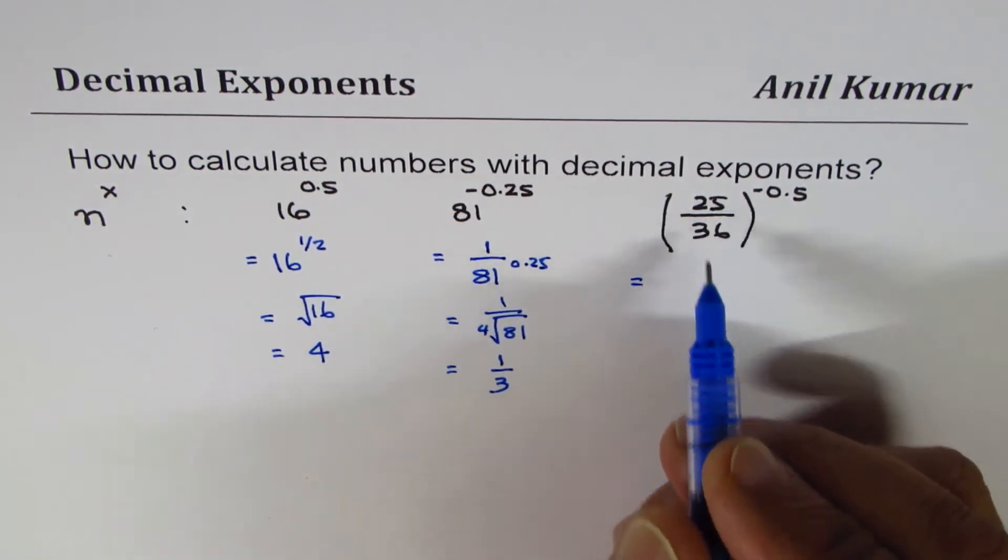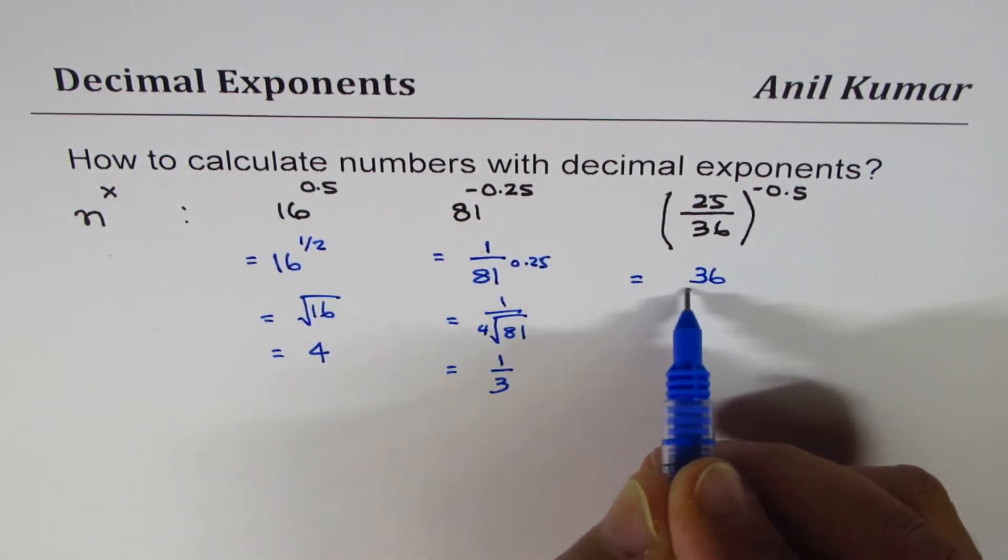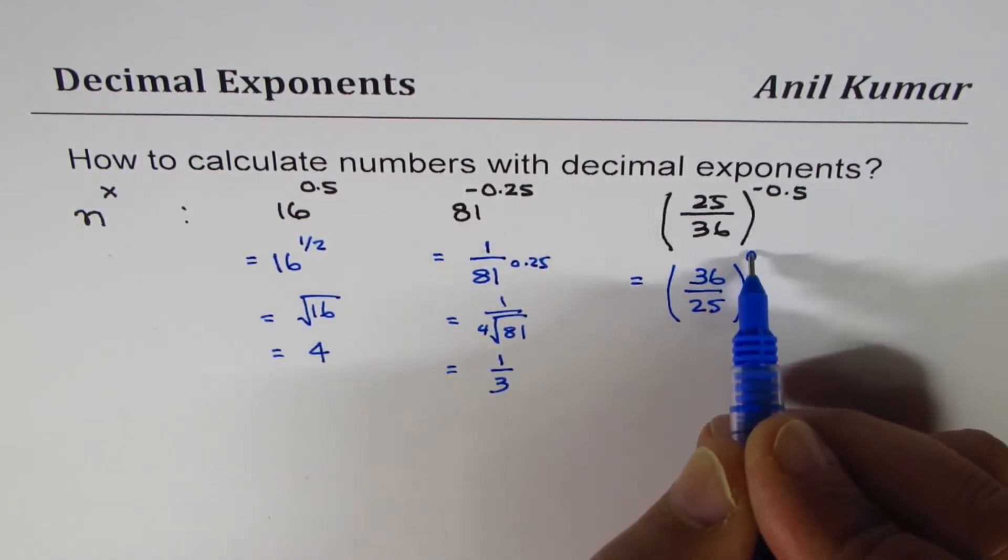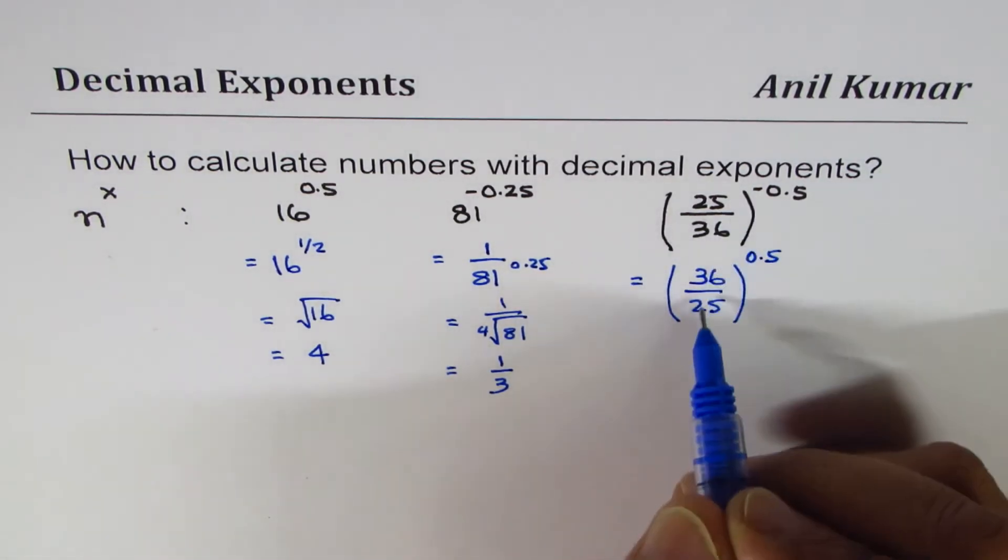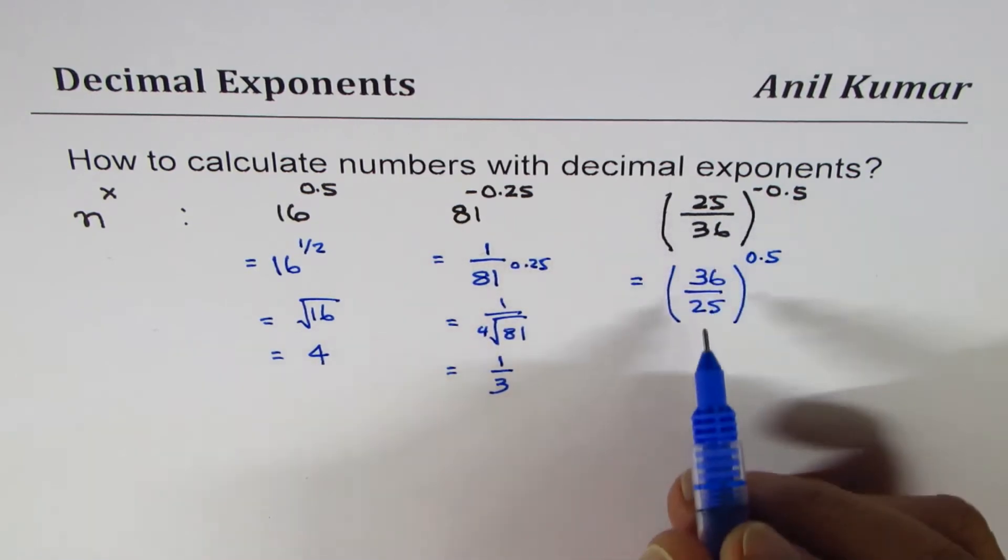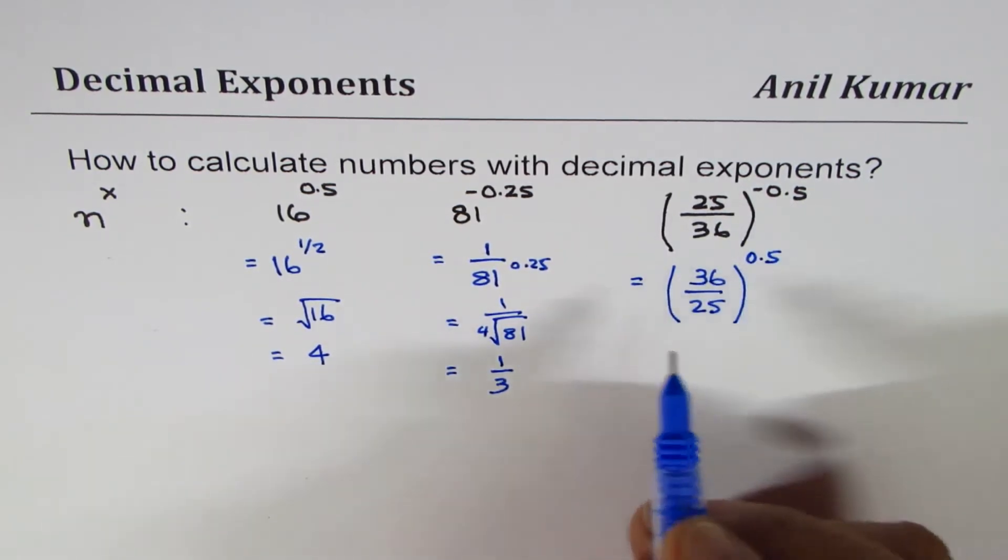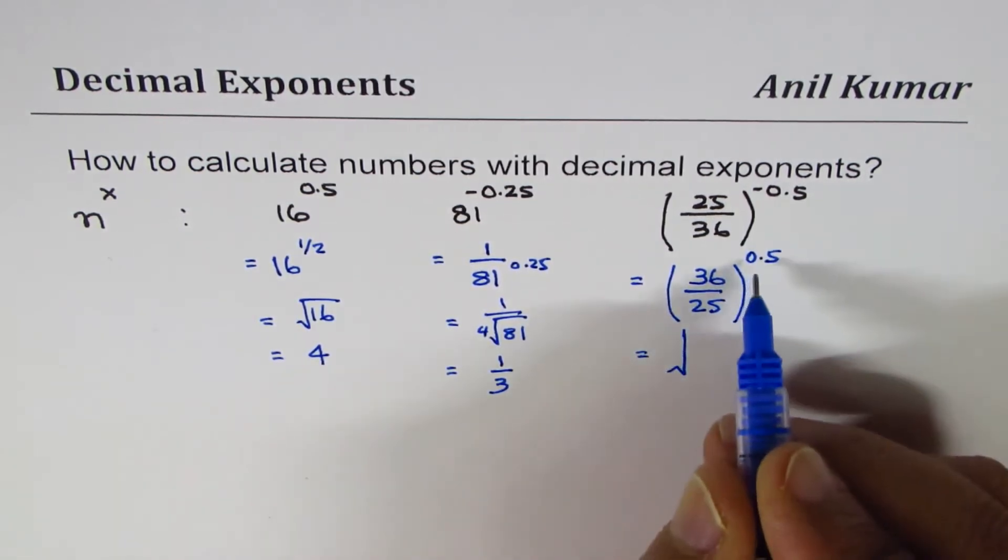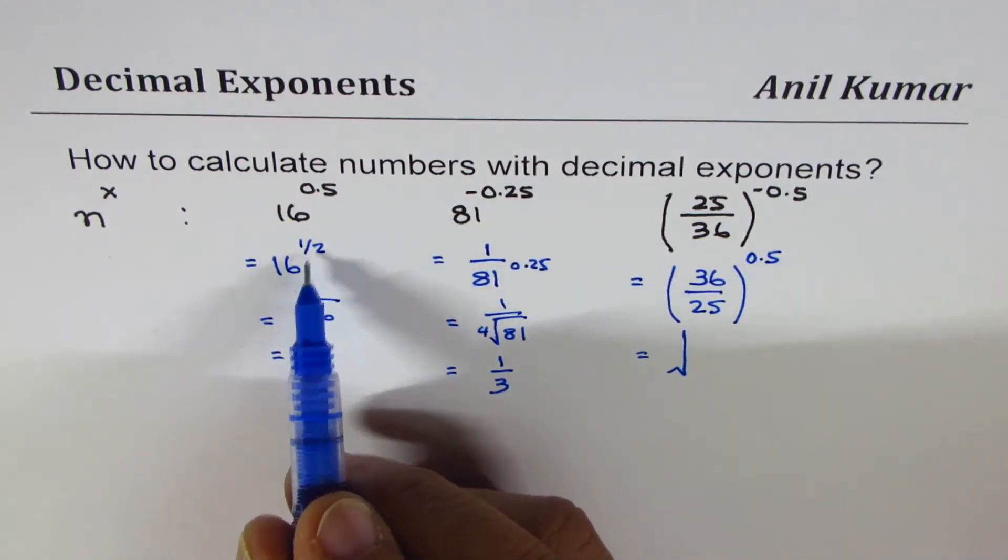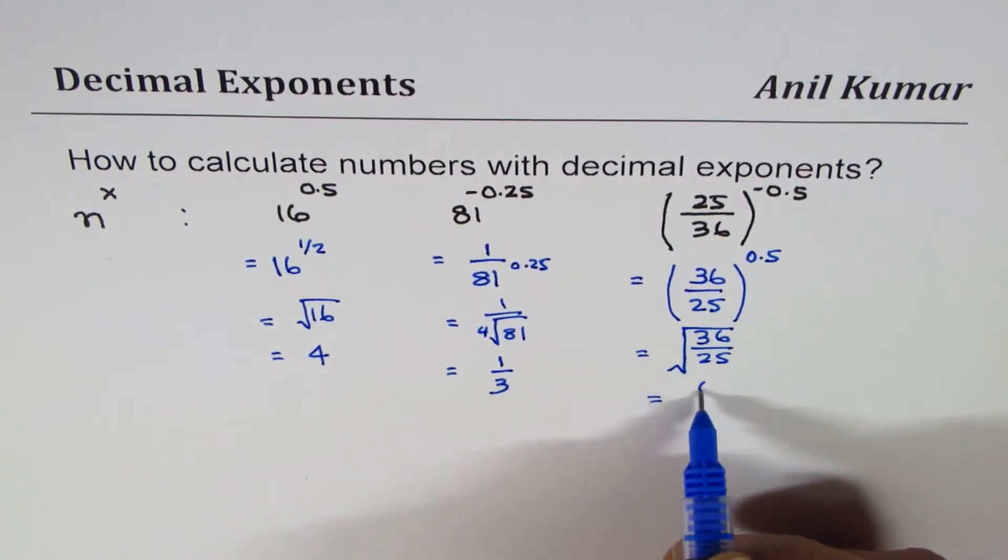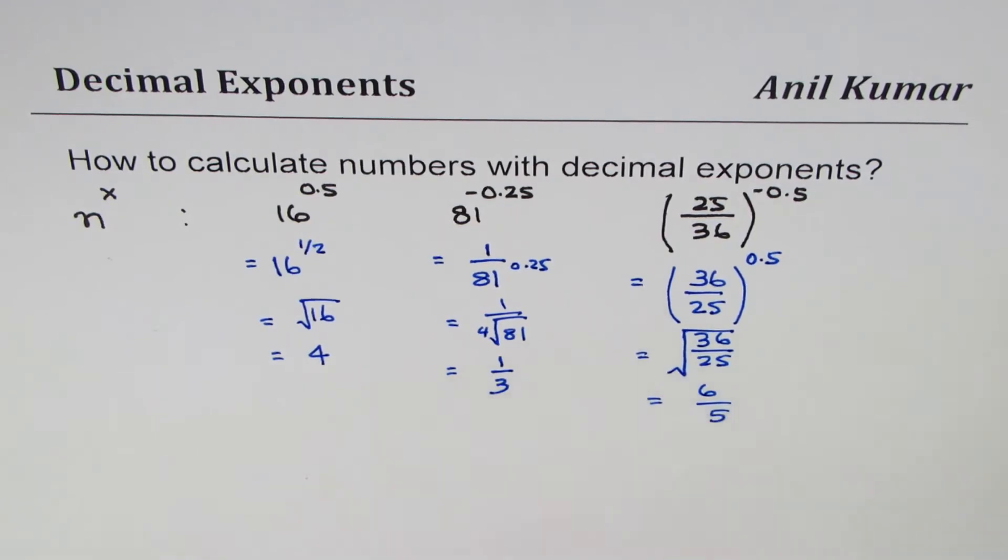In this example, negative as we discussed is the reciprocal, so it flips to become 36 over 25, and the exponent becomes 0.5. Now we'll figure out what is the square root of 36 over 25. 0.5 means to the power of half, so we can write this as square root of 36 over 25, and that is equal to 6 over 5.